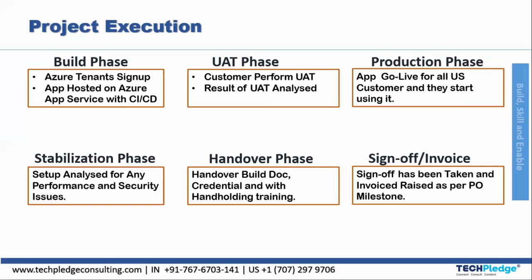After handover comes the last step: Sign-off and Invoice. The sign-off is taken and the invoice is raised as per the purchase order milestone. All phases from build, UAT, production, stabilization, handover, to sign-off and invoice come under project execution. This concludes the overview from project envisioning through project execution. We'll take a break here and meet for the second module.